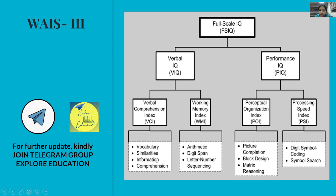The verbal subtests in WAIS-III are: Vocabulary, Similarities, Information, Comprehension, Arithmetic, Digit Span, and Letter-Number Sequencing. The performance subtests are: Picture Completion, Block Design, Matrix Reasoning, Digit Symbol Coding, and Symbol Search. This is the complete structure of the third revision from 1997.